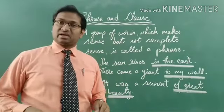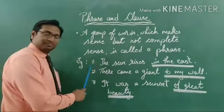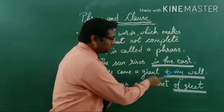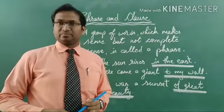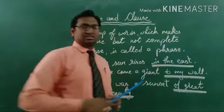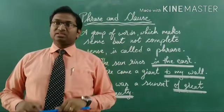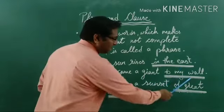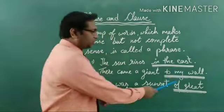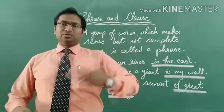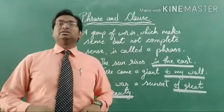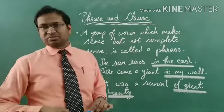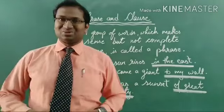Let us see examples so that we can understand phrases clearly. First example: 'The sun rises in the east.' This is a full-fledged sentence. The underlined words are your phrase — 'in the east.' 'In the east' is not giving any complete sense, that is why it is a phrase. Next: 'There came a giant to my wall.' This is also a full-fledged sentence, and the underlined phrase is 'to my wall.' No meaning is coming out from 'to my wall,' so that is why we call it a phrase. Last example: 'It was a sunset of great beauty.' 'Of great beauty' is your phrase, because complete sense is not coming out.